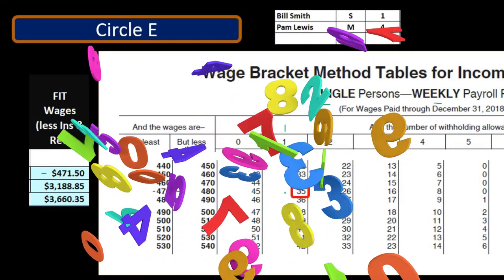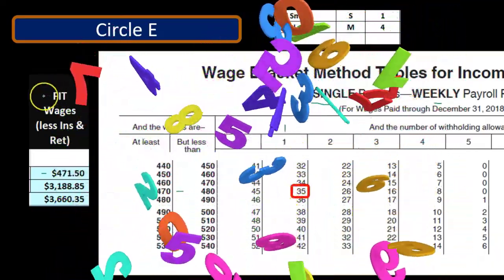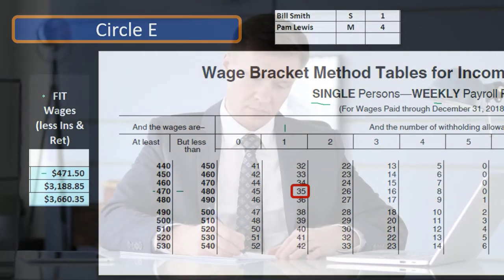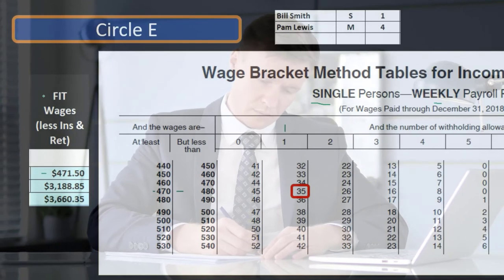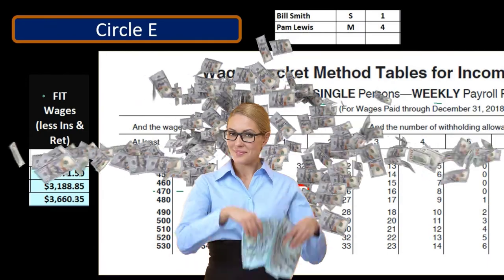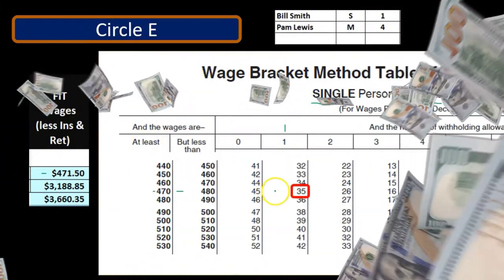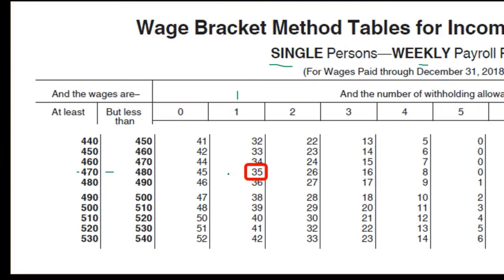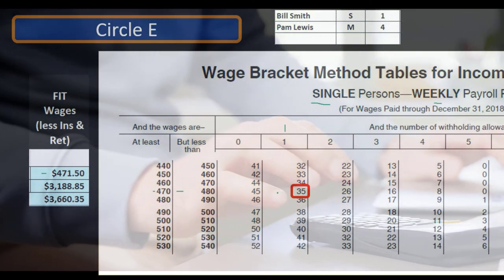You might ask: what if I pick up the wrong number? If we're doing this by hand and pick the wrong number, it will kind of wash itself out at the end. FIT works itself out because when we do the 1040, the total withholdings will match up to what the actual tax calculation was. If we withheld too much we get a bigger refund; if we withheld too little we owe money. We want it right on target so employees get as much as possible in their paycheck.